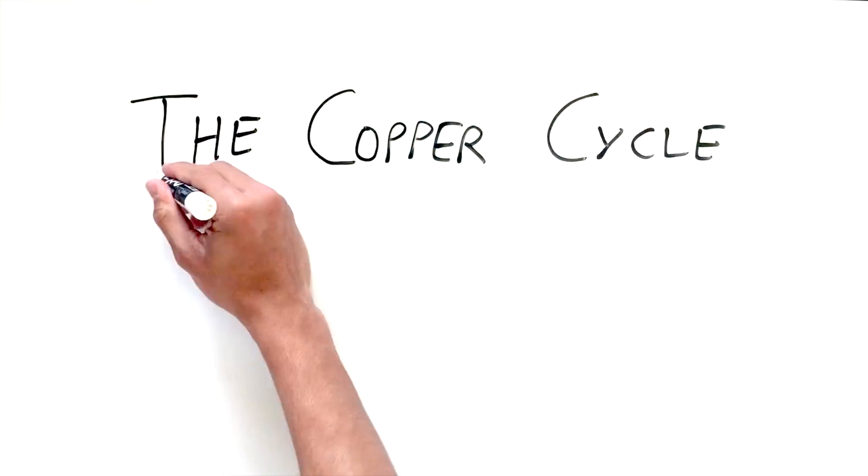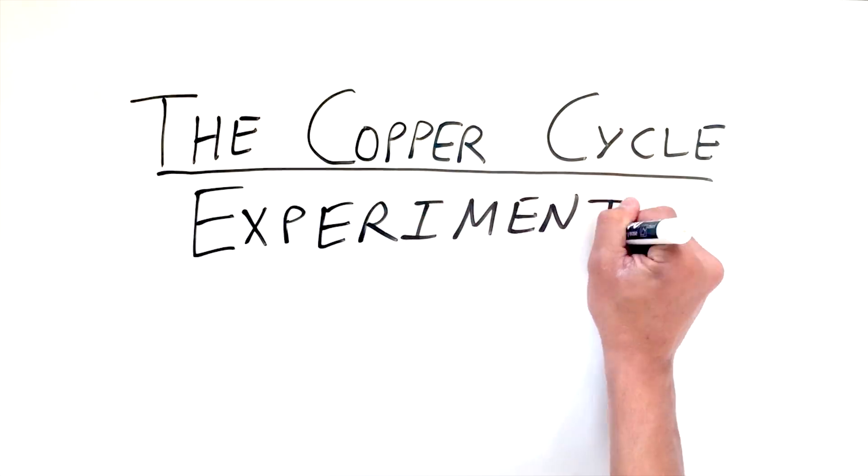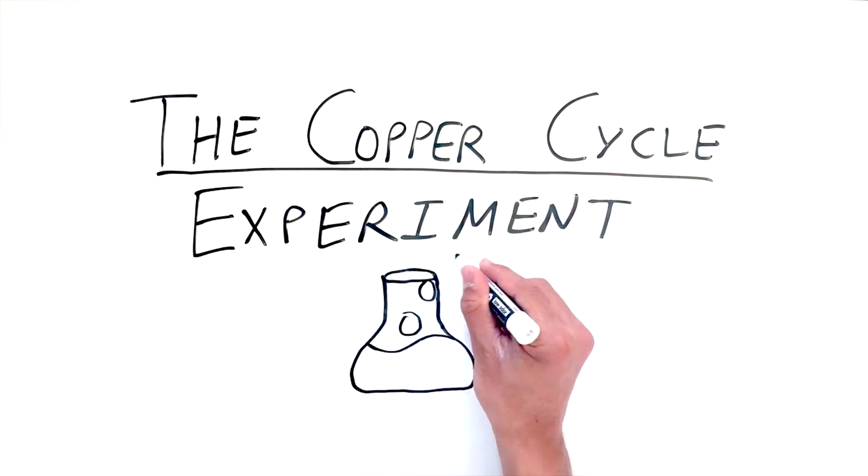The copper cycle is a set of reactions that demonstrate how copper can transfer between different states of matter and still return to a solid. In this experiment, our objective is to observe these states. Let's begin.